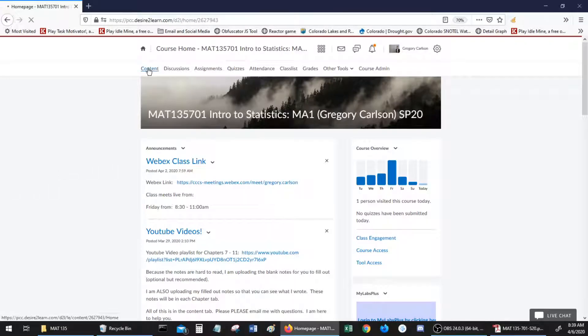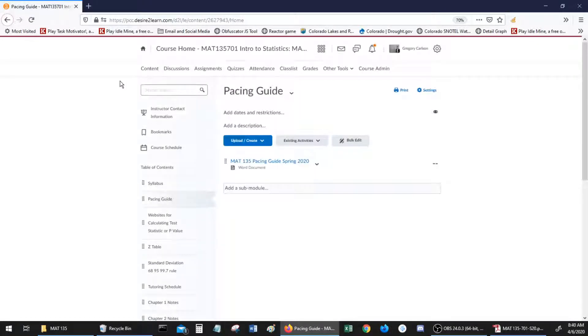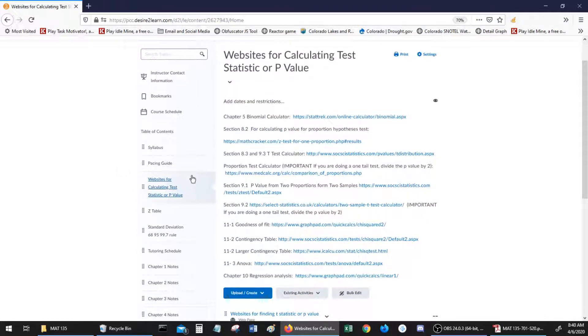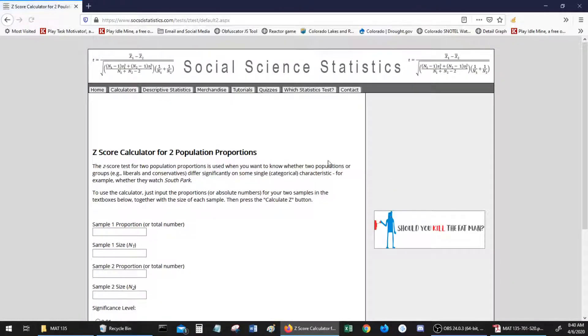I'm on D2L. I'm going to click the content tab for our class and come down to the section on websites for calculating the p-value. You'll notice that I have a section 9.1 p-value for two proportions from two samples. Let's go to this website.